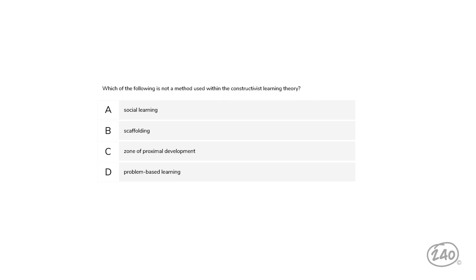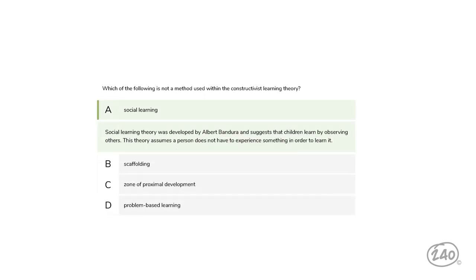For research and theories: Which of the following is NOT a method used within the constructivist learning theory? Social Learning, Scaffolding, Zone of Proximal Development, or Problem-Based Learning. The correct answer is Social Learning — we covered the other choices earlier. Social learning theory was developed by Albert Bandura and suggests that children learn by observing others, assuming a person does not have to experience something to learn it.